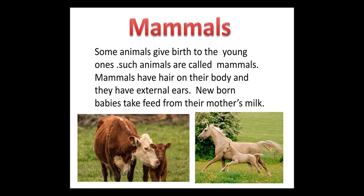Now I am going to tell you about two kinds of animals. The first one is mammals. Some animals give birth to their young ones — such animals are called mammals, also known as birth-giving animals. Mammals have hair on their body and they have external ears. Newborn babies take feed from their mother's milk. Here are two pictures of mammals: a cow and its calf, and a horse and its young one, called a foal.